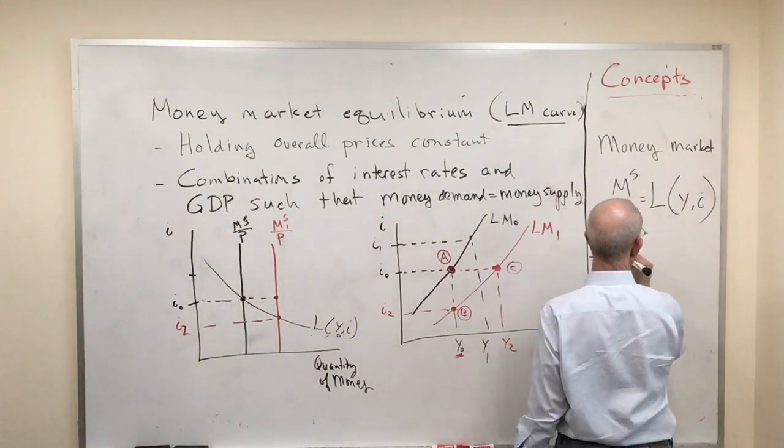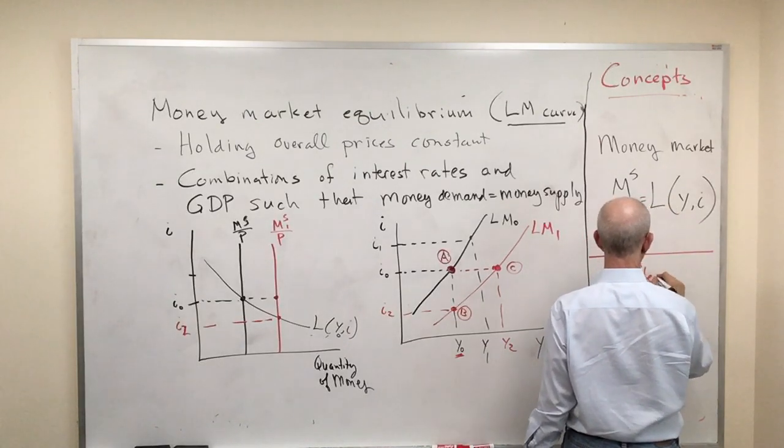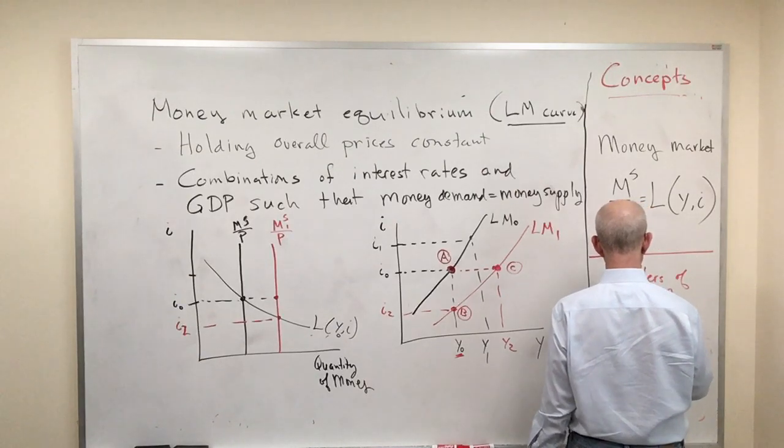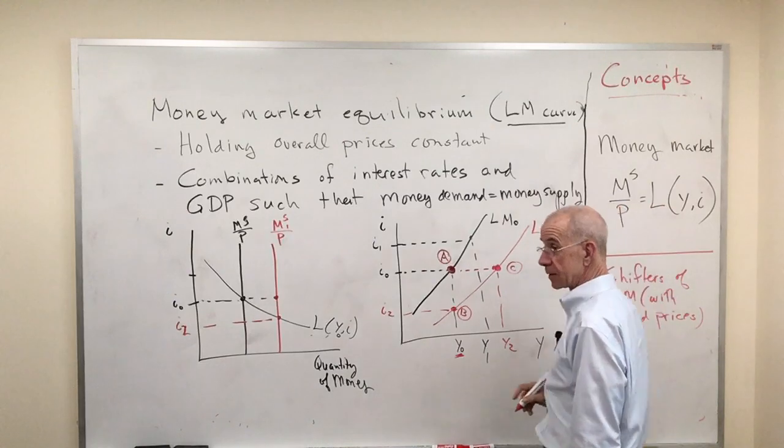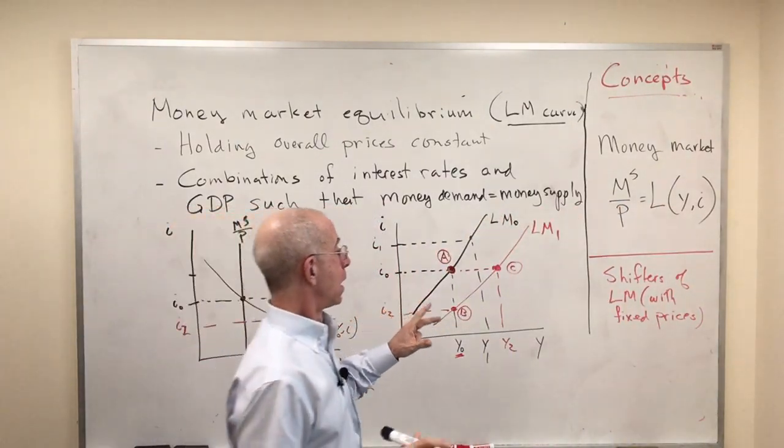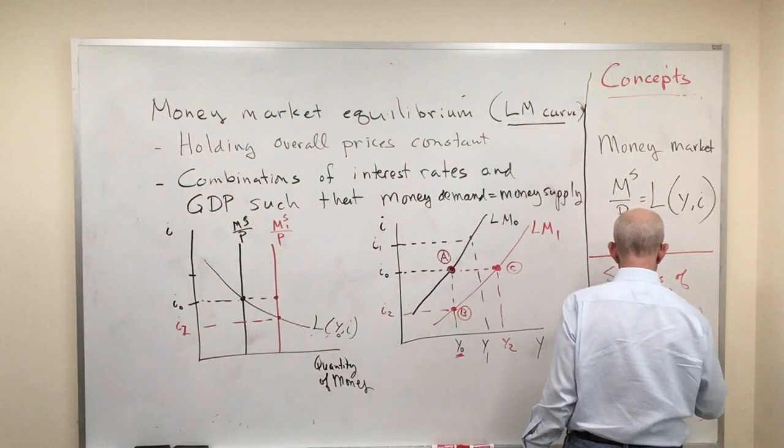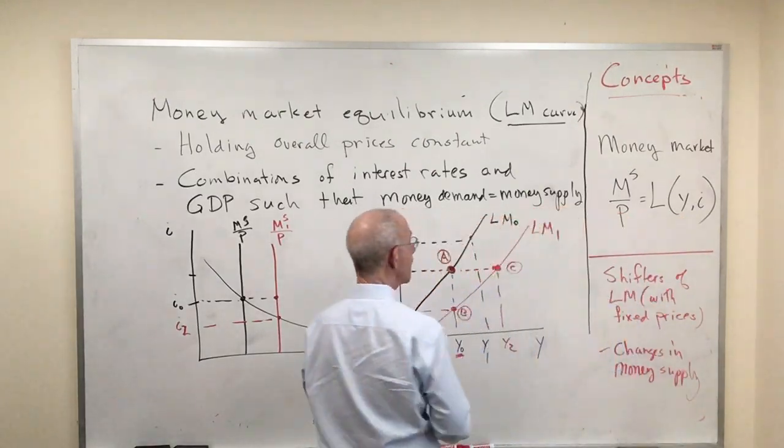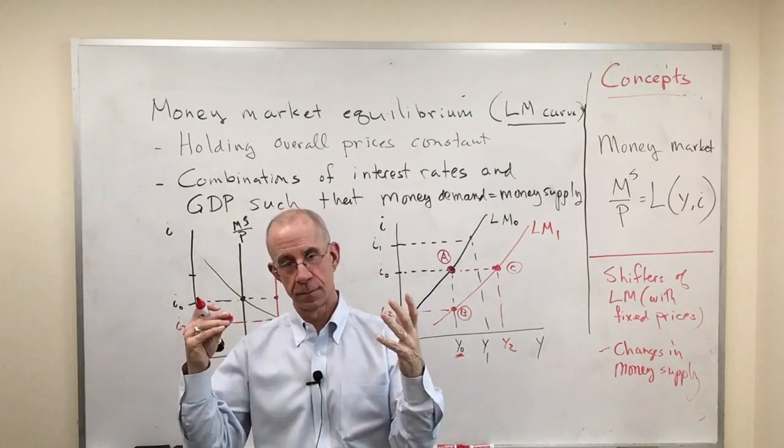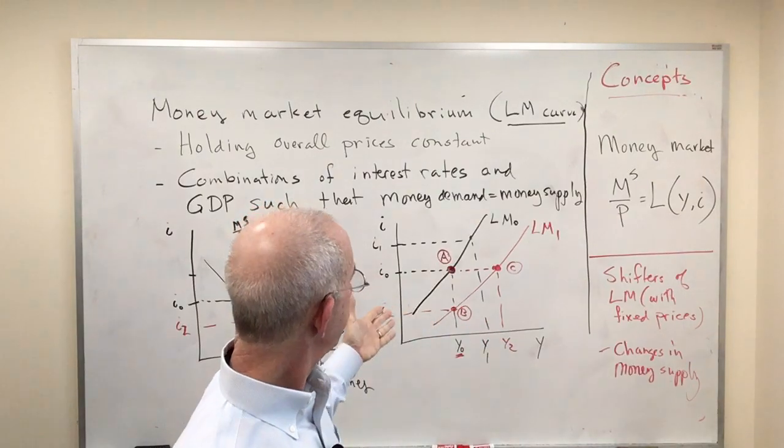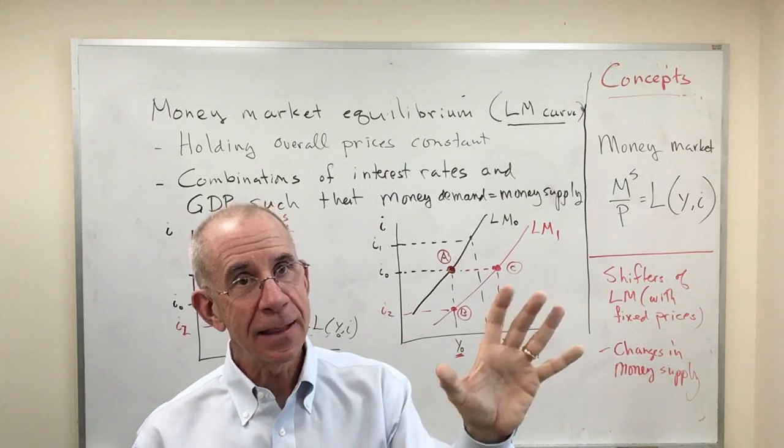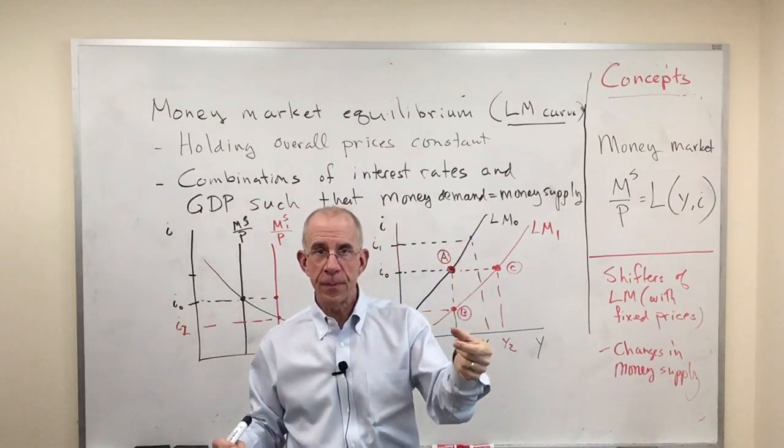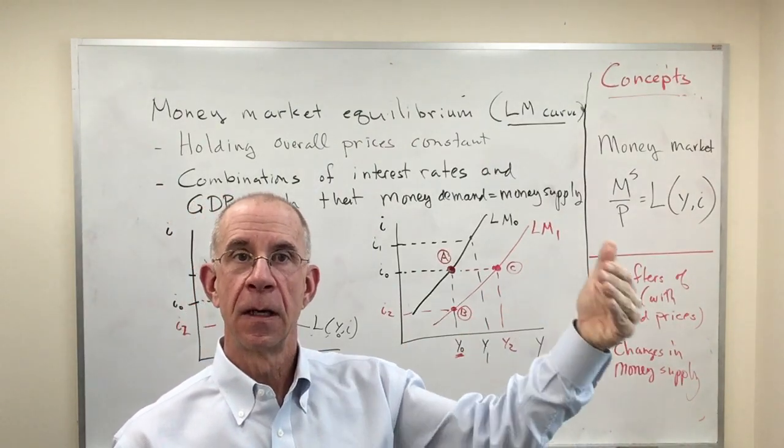The main thing that you want to keep in mind for this situation is the shifters of the LM curve. Again, I want to emphasize, this is holding prices fixed. Changes in the money supply shift the LM curve. An increase in the money supply shifts the LM curve out. Now generations of students will often think of that LM curve as the supply of money. It's not. Money supply is depicted over here.